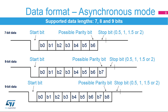Finally, a number of stop bits selected from 0, 1, 1.5, or 2, where the line is driven high, ends the frame. Data order is programmable with MSB first or LSB first shifting.